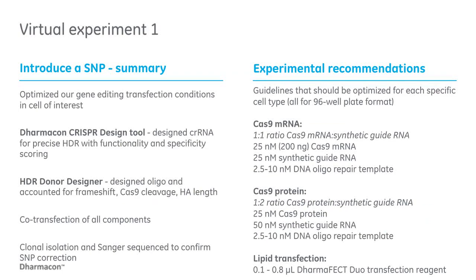That brings us to the end of our first virtual experiment. A quick recap: we optimized our transfection conditions, used our CRISPR design tool for guide RNAs specific for HDR, used the donor designer to order a single-stranded DNA donor oligo, transfected everything together in our HDR experiment, and finished with clonal isolation and Sanger sequencing to confirm our correction. The recommended conditions to start with are also listed in all of our manuals and protocols.